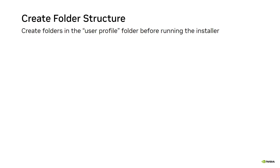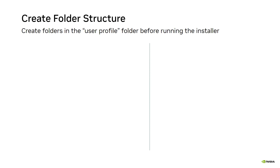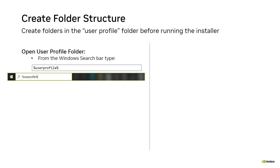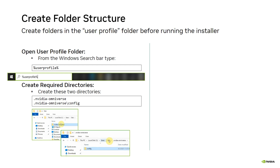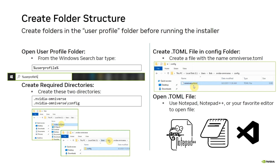Before running the installer, the Omniverse system administrators need to create the following folders in their user profile: .NVIDIA-Omniverse and .NVIDIA-Omniverse/config. For example: users/username/.NVIDIA-Omniverse/config. To open the User Profile folder, in the Windows search bar type %UserProfile%. Then create the two directories shown, and do not forget the dot prefix in the folder name. In the newly created config folder, create a file named omniverse.toml and open it with your favorite text editor.